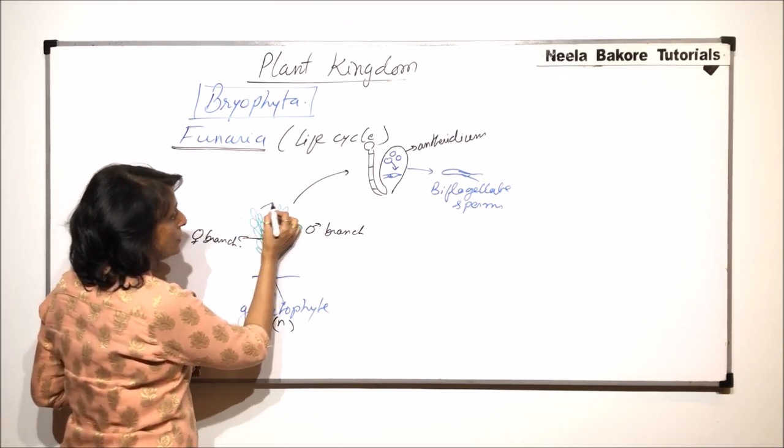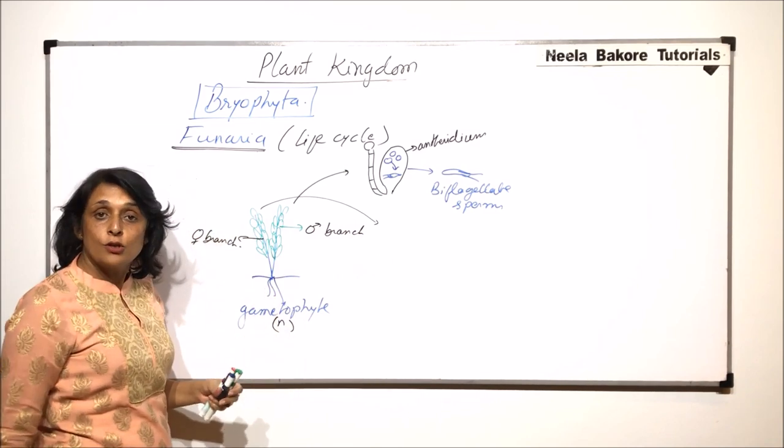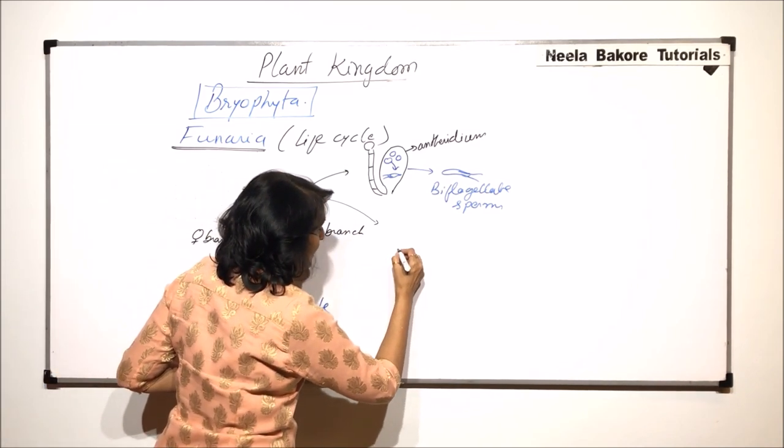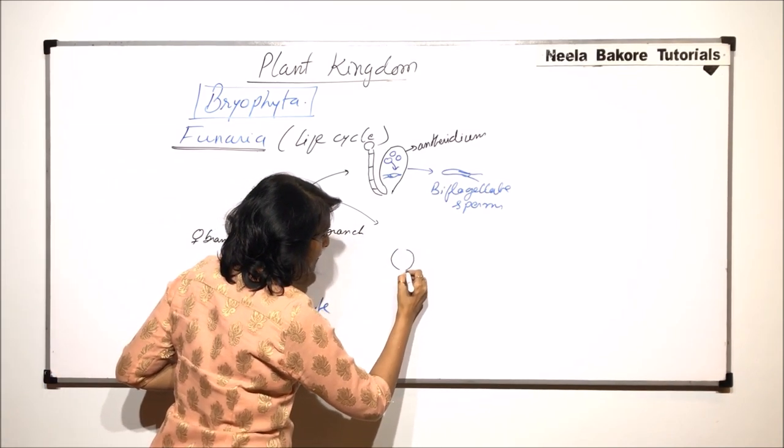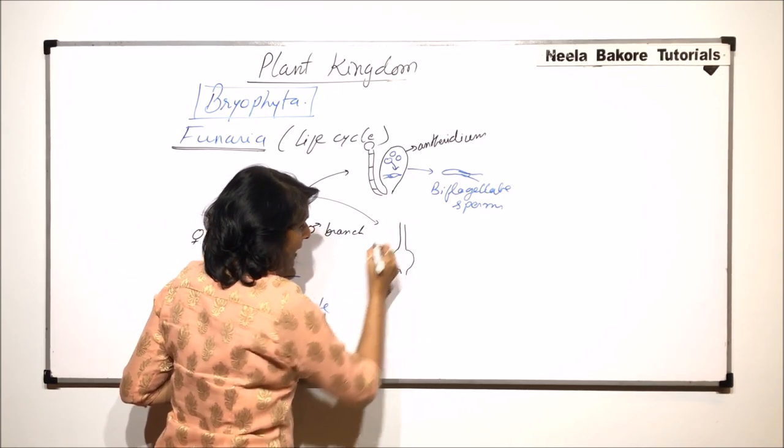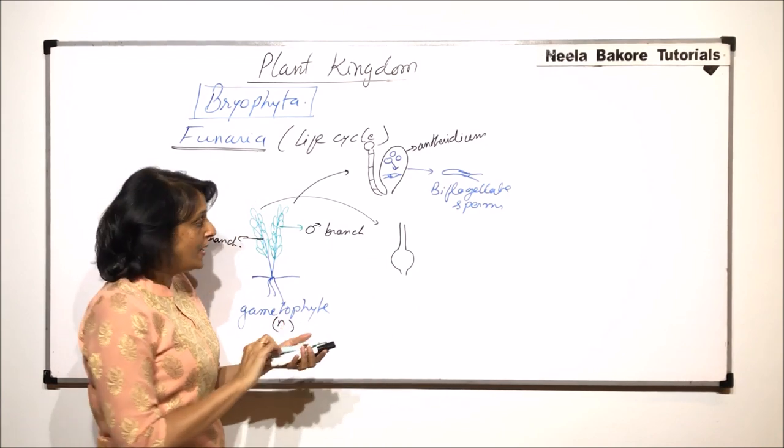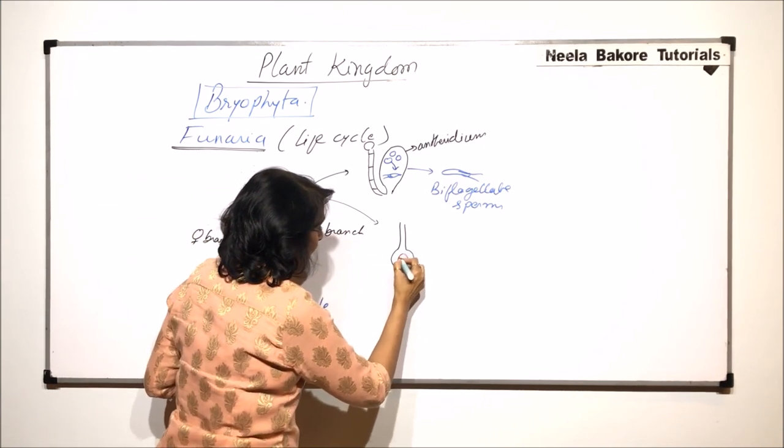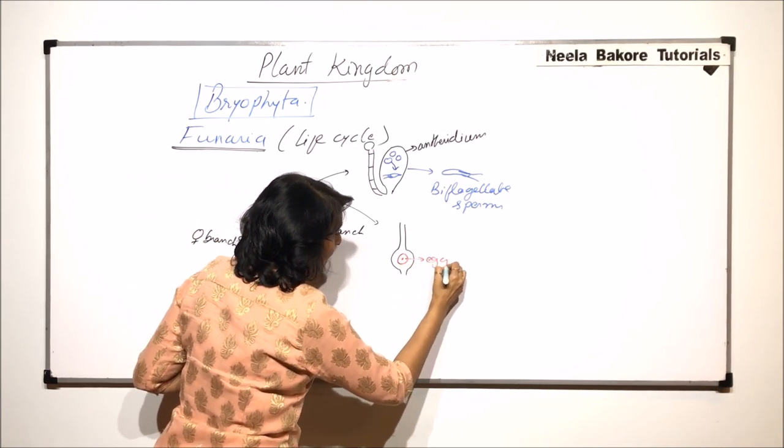Now if we talk about the female branch, here also we have seen the structure in detail. The swollen lower part which is called the venter, then there is a stalk and the neck. And inside is present one large egg. So this is the egg.